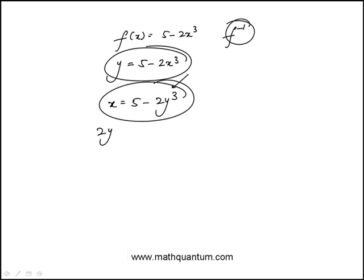So I move the 2y cubed term here, move x to the other side. And then isolate y, which would be cube root of 5 minus x over 2.